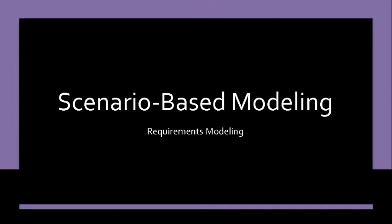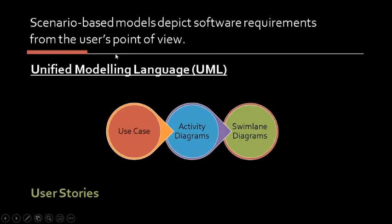There are also external systems — third-party systems — that can be a good source of information or a recipient. If we understand how end users and other actors want to interact with the system, our engineers will be better able to properly characterize requirements and build meaningful analysis and design models. The tools commonly used to model user scenarios are use cases.